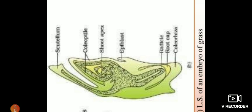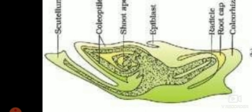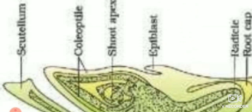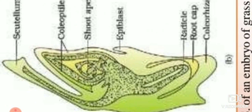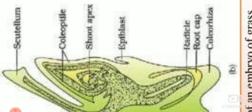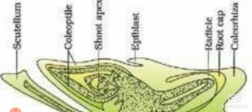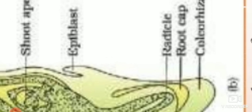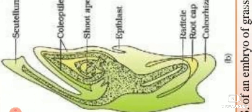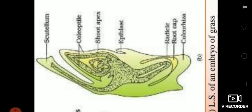In the monocot embryo diagram, there is only one cotyledon (scutellum) on one side of the embryonal axis. The epicotyl forms a halo-like structure — the shoot apex — covered by the differentiated coleoptile. The hypocotyl turns into the radicle, covered by the root cap, which is further covered by the undifferentiated coleorhiza. This is the LS of embryo in grass.